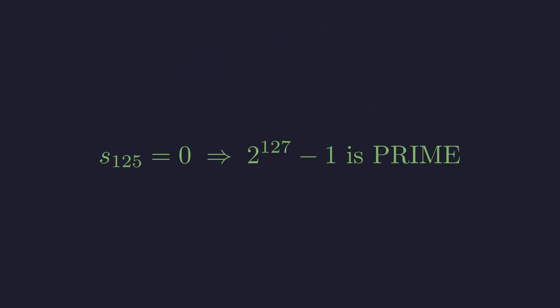That final 0 is the checkmate. By the rules of the Lucas-Lehmer test, this is the definitive, undeniable proof that 2 to the 127 minus 1 is prime.